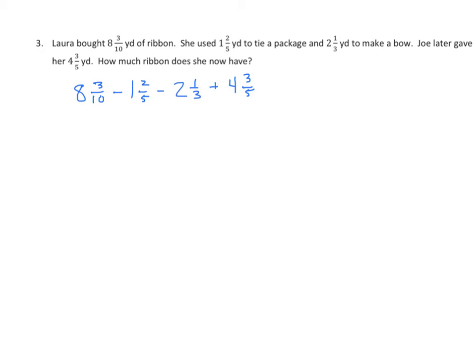So again, we're going to add 4 and 3 fifths, which is 4 and 6 tenths, plus 8 and 3 tenths. We will subtract the sum by 1 and 2 fifths, which is the same as 1 and 4 tenths. When we find the difference, we'll then subtract 2 and 1 third.